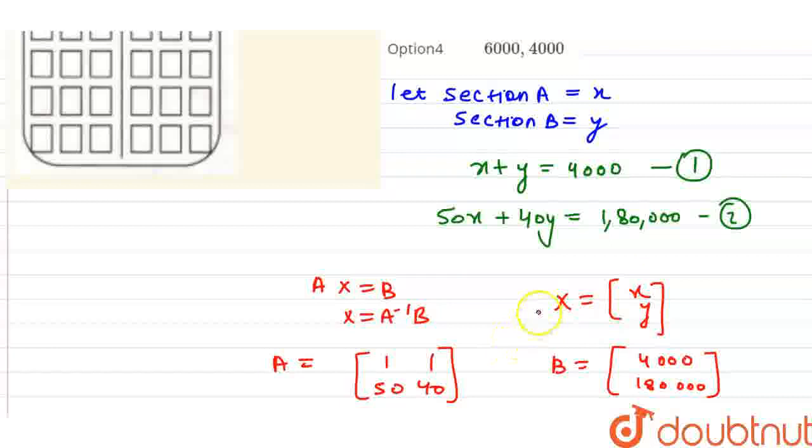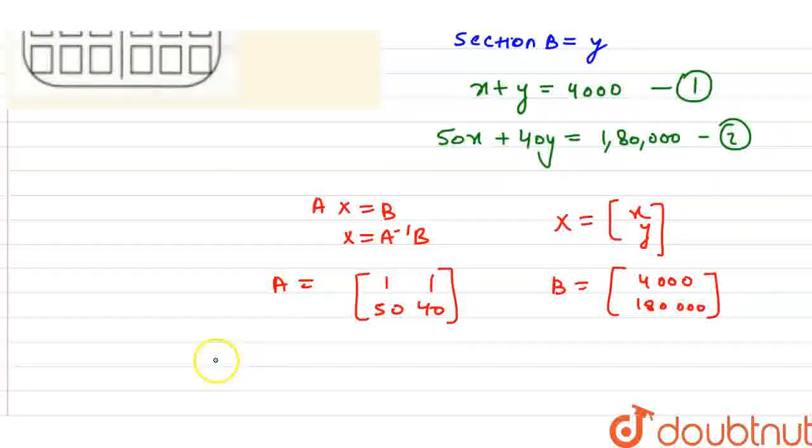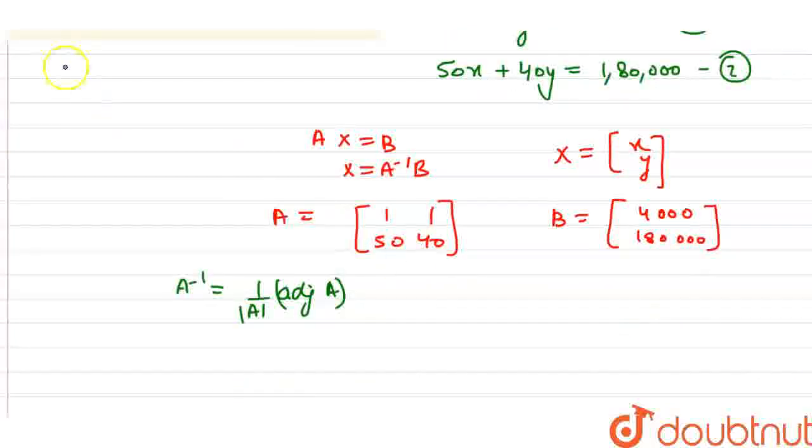To solve, X equals A inverse times B. The formula for A inverse is 1 over the determinant of A times the adjoint of matrix A. The determinant of A is 40 minus 50, which equals minus 10.